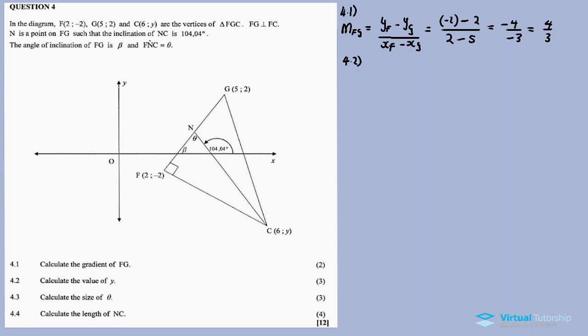But since line FG is perpendicular to FC, and for perpendicular lines if I multiply the gradients I must get negative 1. So gradient FG times gradient FC is negative 1. The gradient of FG is 4 over 3, so making FC the subject of the formula gives negative 3 over 4.